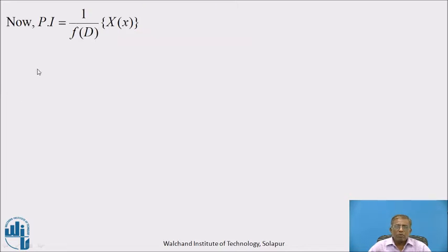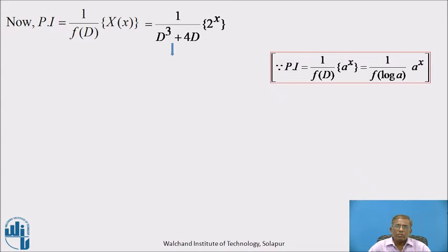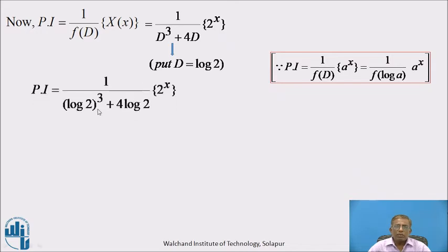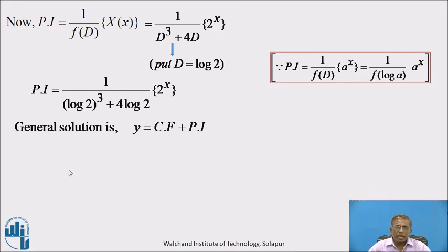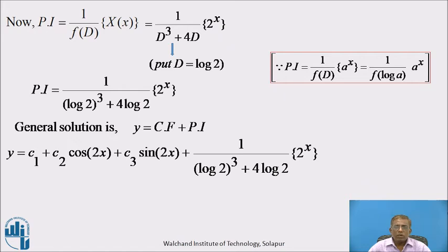For the particular integral: PI = 1/f(D) operating on X(x), so PI = 1/(D³ + 4D) operating on 2^x. Since 2^x is of type a^x, put D = log 2. Hence, PI = 1/(log 2)³ + 4·log 2) · 2^x. Therefore, the general solution is y = CF + PI: y = C₁ + C₂ cos 2x + C₃ sin 2x + 1/((log 2)³ + 4 log 2) · 2^x. This is the general solution of the given differential equation.